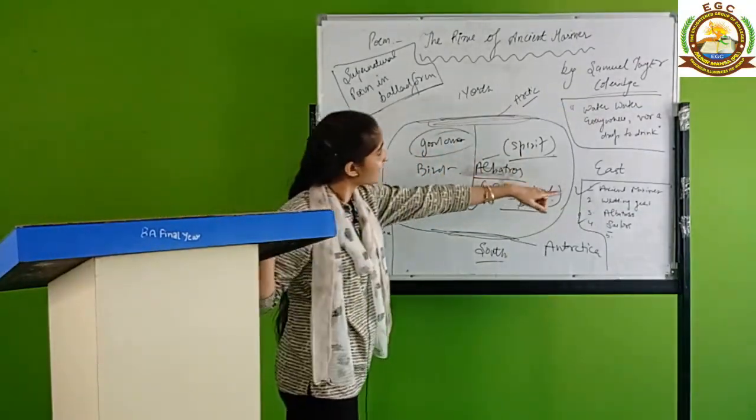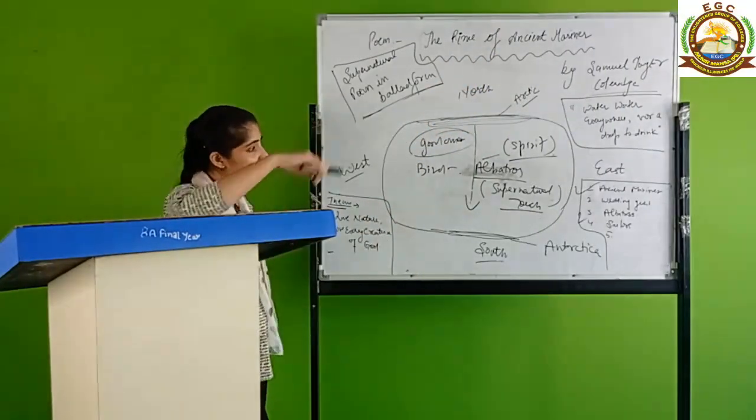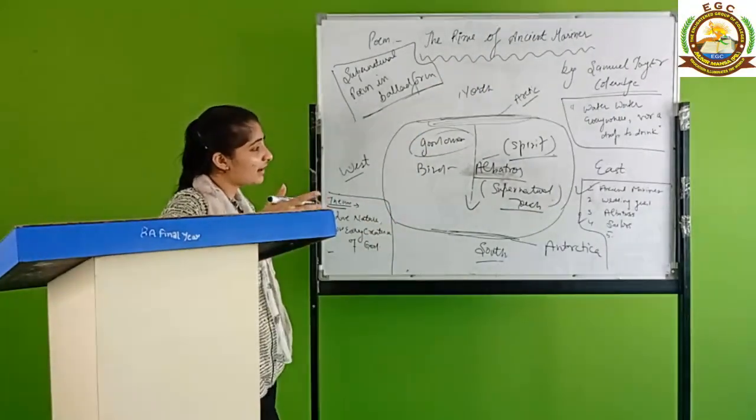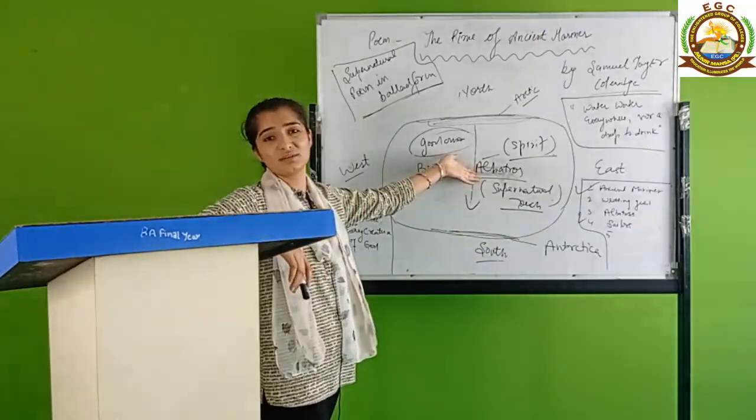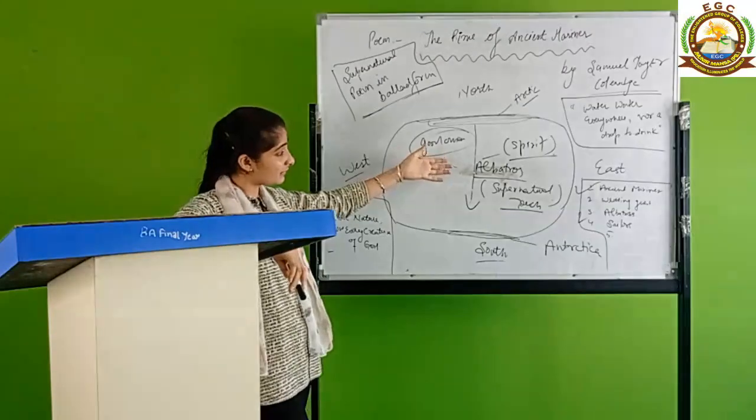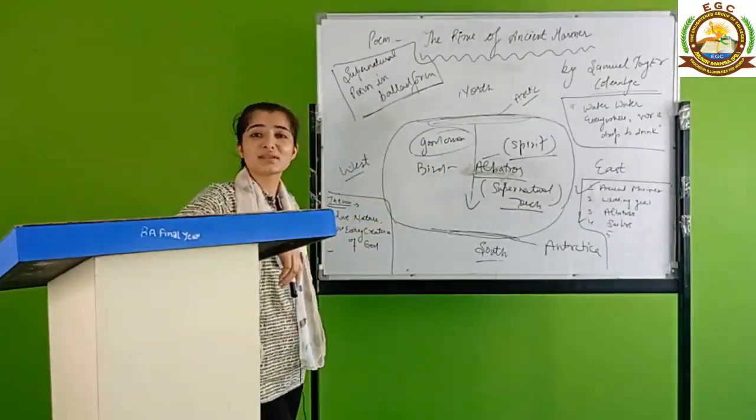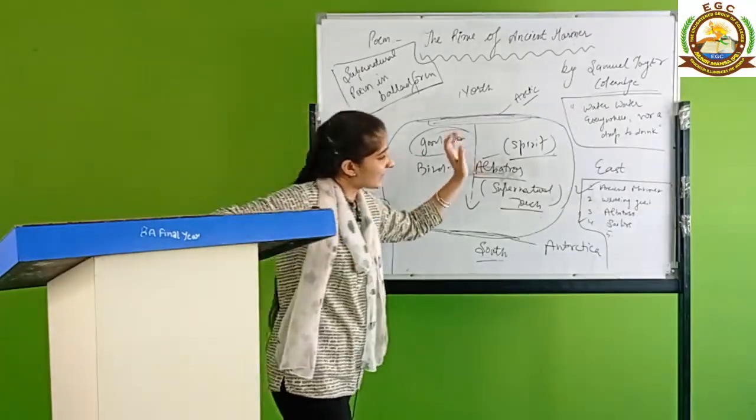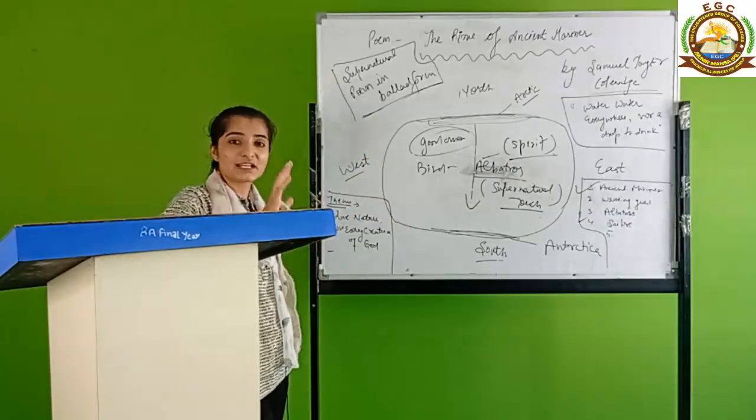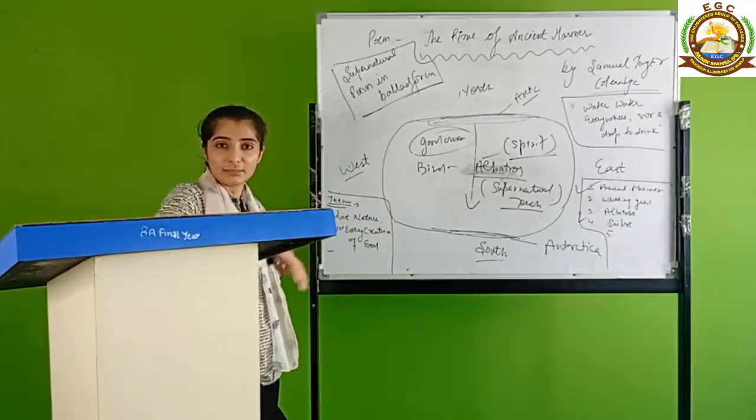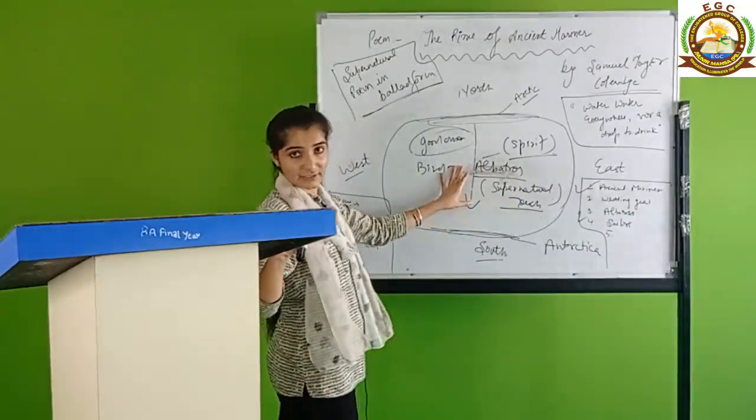The other mariners were saying this bird is a messenger of God. But the ancient mariner thought, why are these people with me being crazy? Why are they calling this bird good omen? How can a bird be messenger of God? The ancient mariner took his bow and arrow and killed him, murdered him.